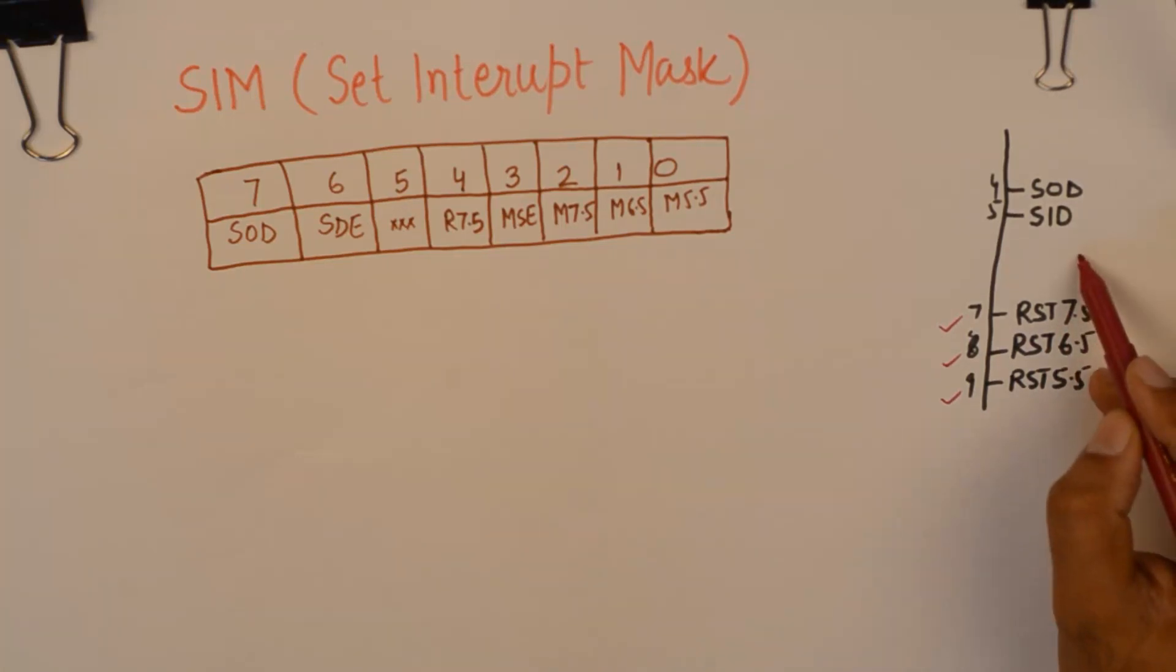The pin numbers for them are written over here. In the IC pin out diagram, you will find them as 7, 8, 9 pins.